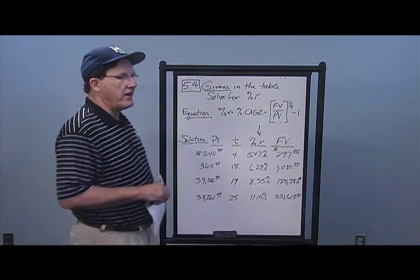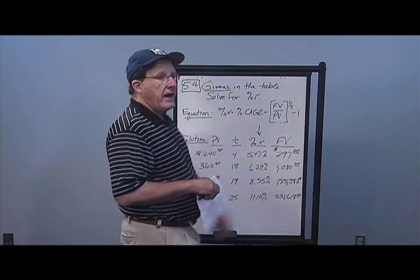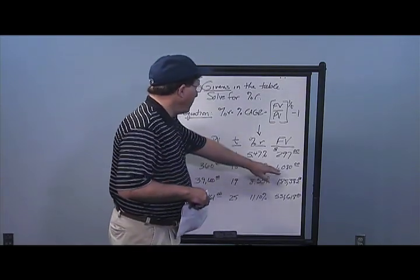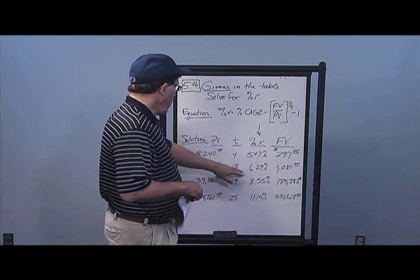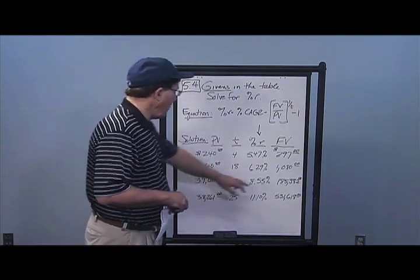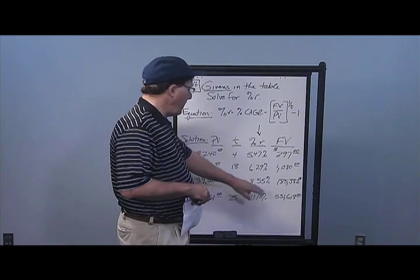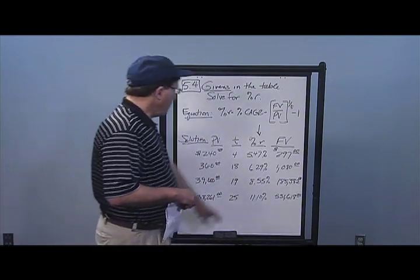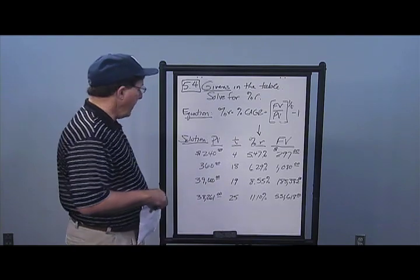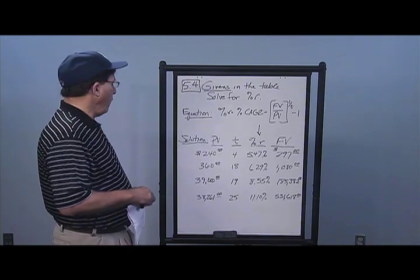You can verify by taking 240 times (1.0547) to the 4th, which should return $297. In the second case, (1,080 / 360) to the (1/18) power minus 1 gives 6.29%. Third case, (185,382 / 39,000) to the (1/19) power minus 1 gives 8.55%. Fourth case, (531,618 / 38,261) to the (1/25) power minus 1 gives 11.10%. Those are your answers for problem number four.